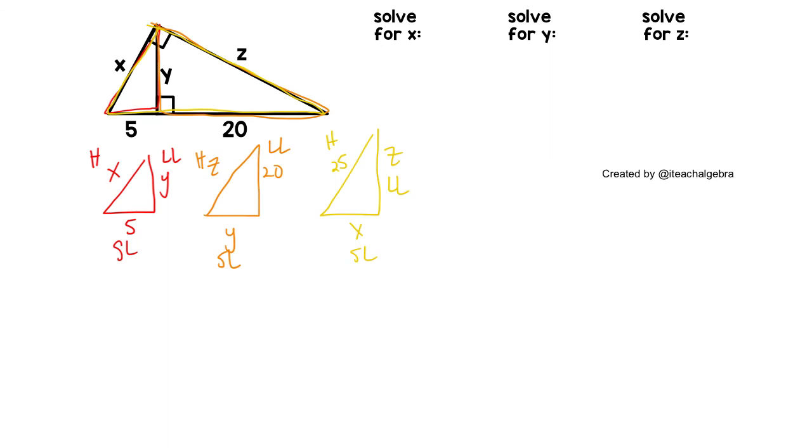So if we want to solve for X, we have X present as the hypotenuse on the red triangle and the short leg on the yellow. So I know I need to use both of those to solve for X. So it will be hypotenuse over short leg. X over 5 in the red triangle and the yellow triangle hypotenuse over short leg. We cross multiply and get X squared is 125. Take the square root of each side and X is the square root of 125.